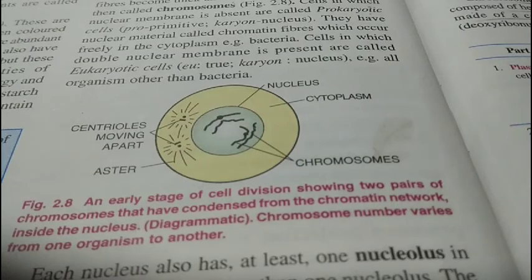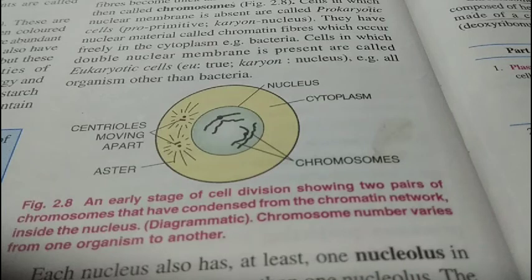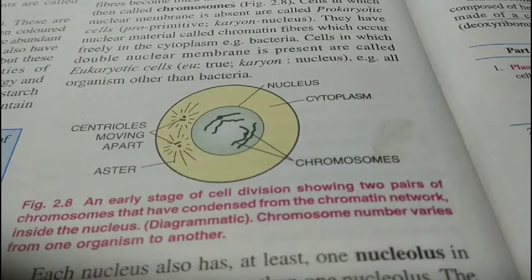The nucleus is covered by a membrane called the nuclear membrane, and inside the nucleus there is a dense part called the nucleoplasm. The thread-like structures found in it are the chromatin fibers. During cell division, these chromatin fibers become thick and ribbon-like, and then they are termed chromosomes.